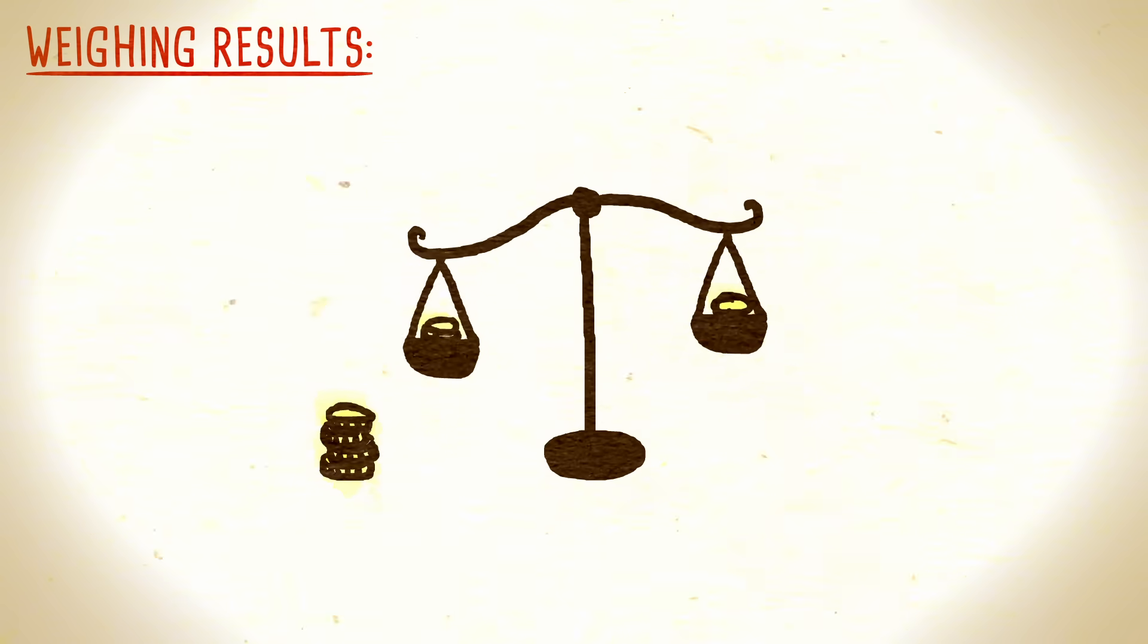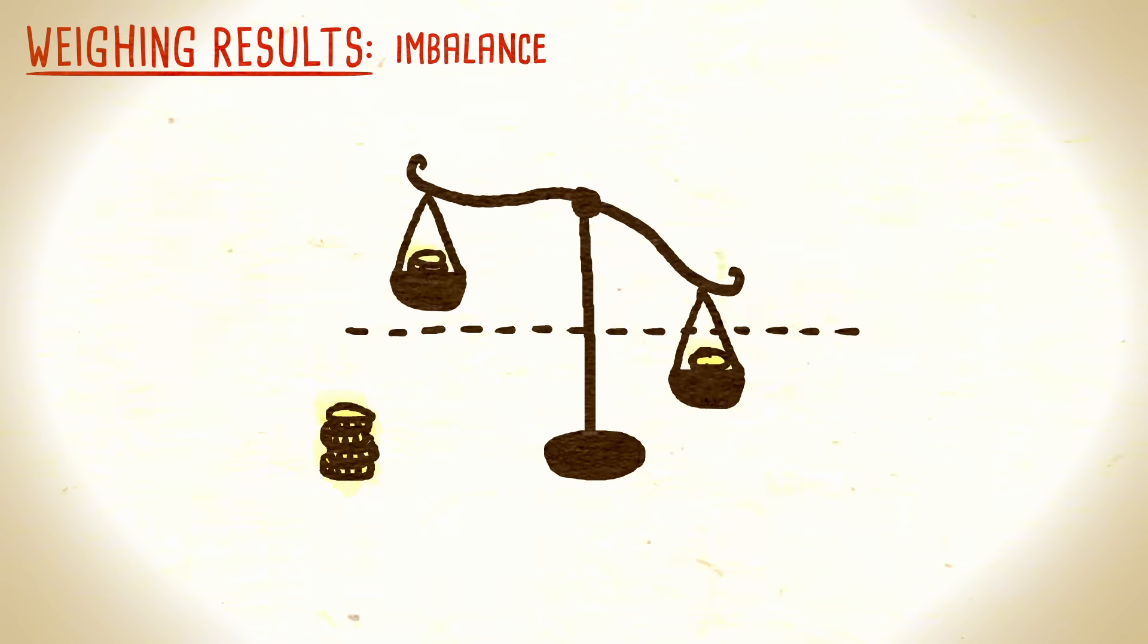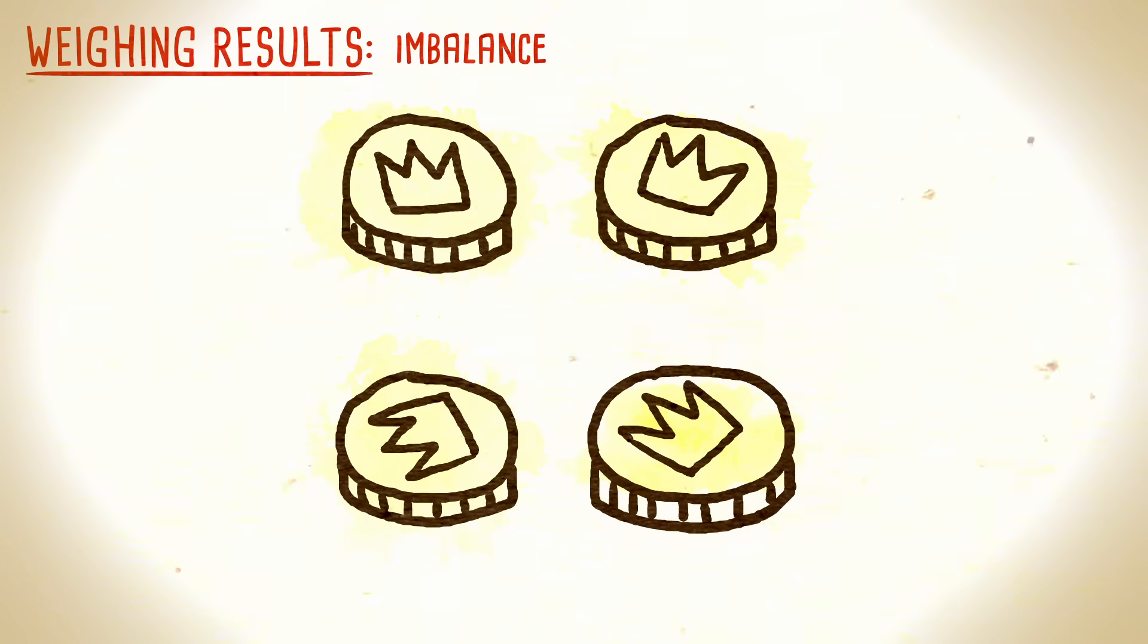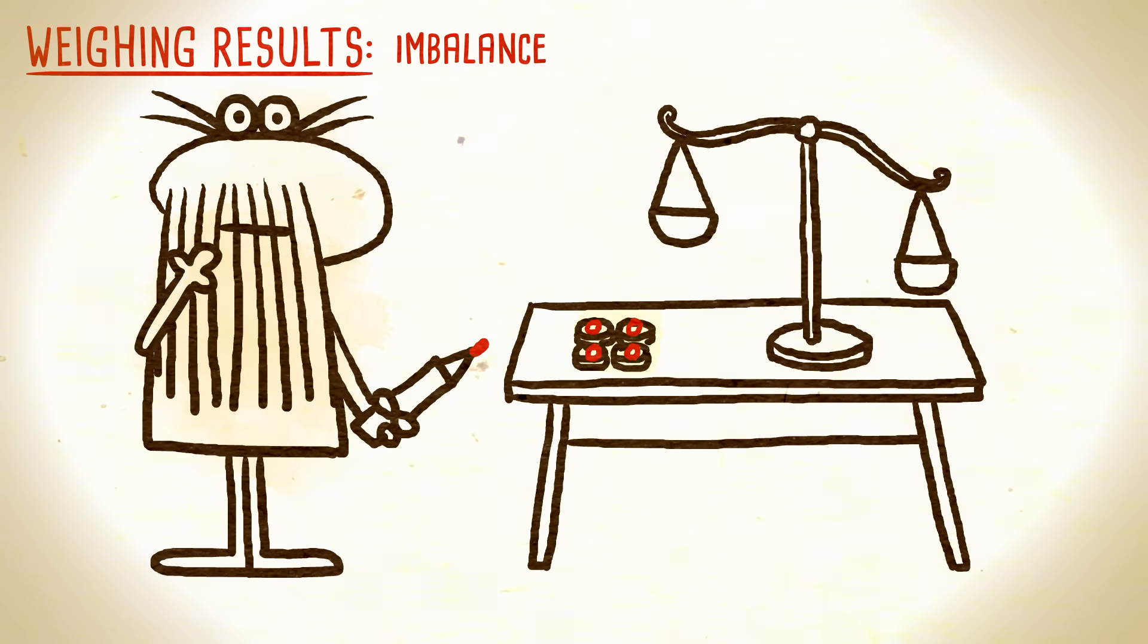But what if the first two piles you weigh don't balance? Mark the coins on the heavier side with a plus, and those on the lighter side with a minus. You can also mark the remaining four coins with zeros, since you know the fake one is already somewhere on the scale.